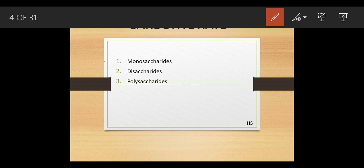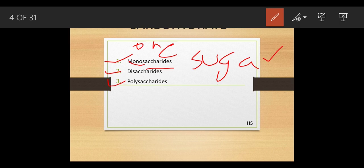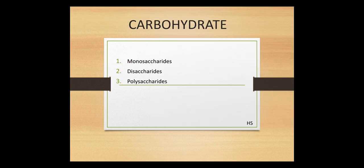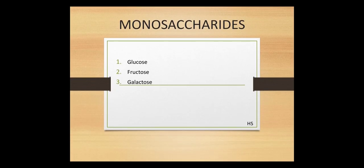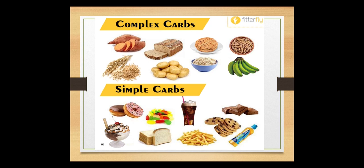The prefix 'mono' means one and 'saccharide' means sugar — so monosaccharide means one sugar unit. Disaccharide means two sugar units, and polysaccharide means more than two sugar units. Let's understand them one by one.